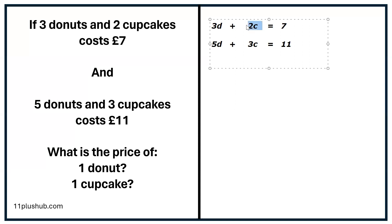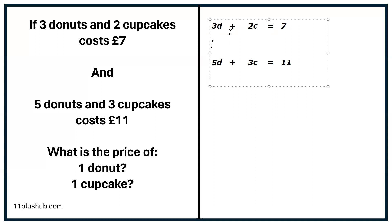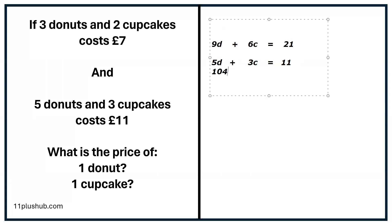How are we going to change 2c into 6c? We multiply it by 3, but we must multiply the whole equation by 3. So 3d times 3 is 9d, plus 2c times 3 is 6c, equals 7 times 3 is 21. Now this one, we need to change 3c into 6c as well. How do we do that? We multiply it by 2, but we have to multiply the whole thing by 2. So 5d times 2 is 10d, 3c times 2 is 6c, and 11 times 2 is 22. And now we can get rid of the originals because we've rewritten them.